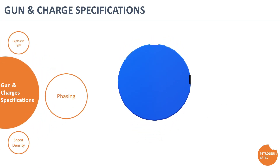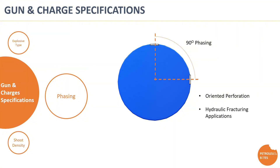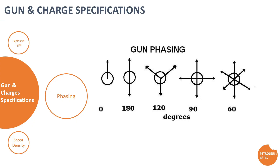Next is the charge phasing — it is the radial distribution of successive perforating charges around the gun axis, or in other words, the angle between successive charges as shown in the schematic. Phasing selection is crucial especially in oriented perforation and hydraulic fracturing applications. Perforating gun assemblies are available in 0°, 180°, 120°, 90°, and 60° phasing. The selection of optimum gun phasing depends on the objective of the perforation.